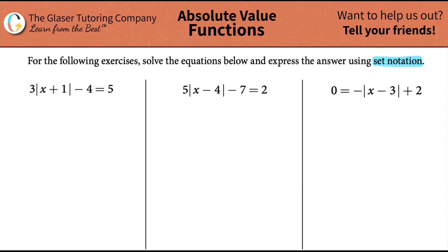The first one: we want to solve for the equation three times the absolute value of x plus one, minus four, equals five. Remember, the whole object of the game is you want to solve for x, and we always want to get rid of things outside of the absolute value first, because x is trapped inside the absolute value.